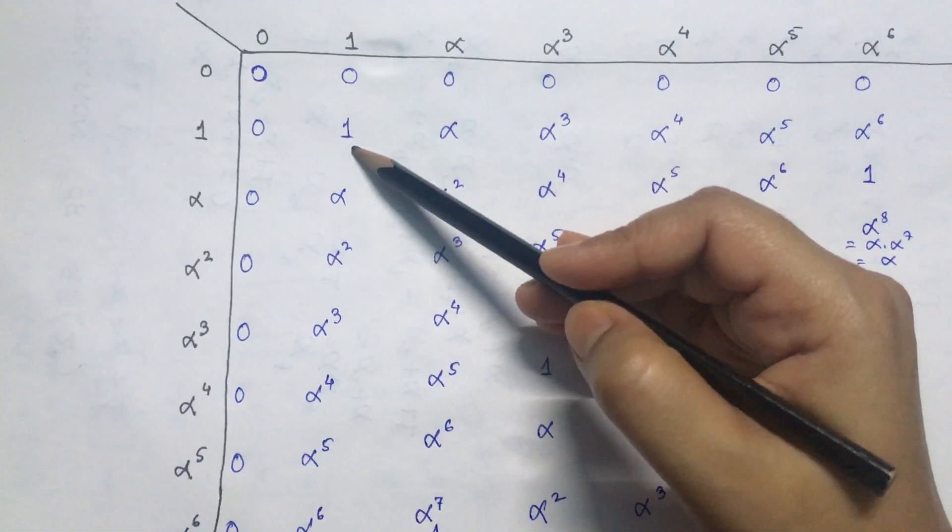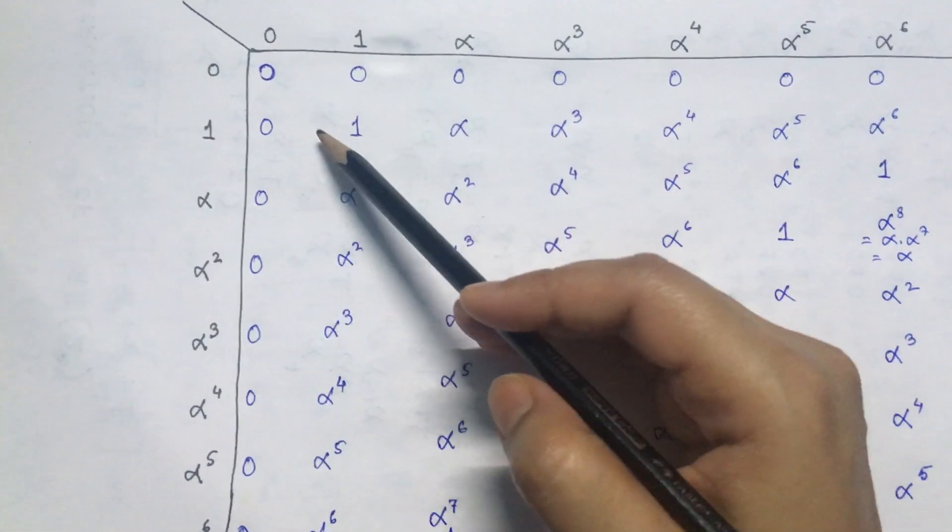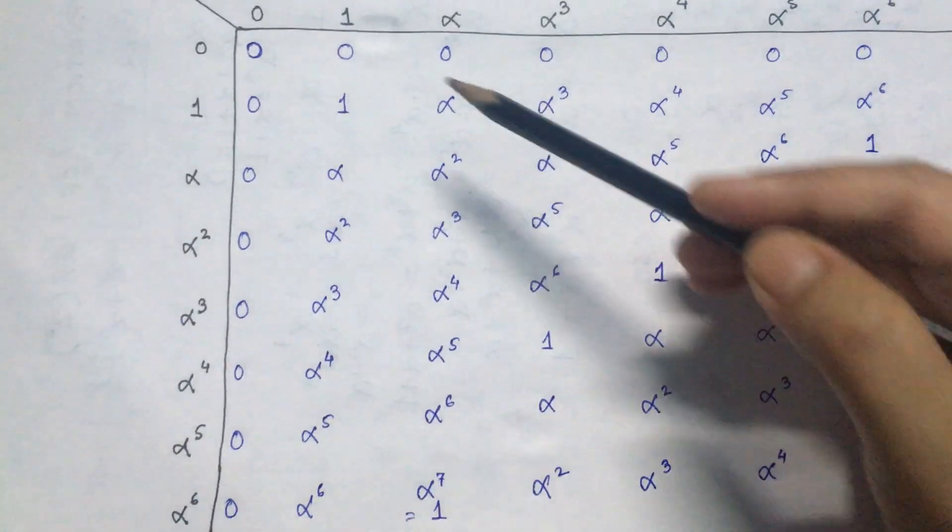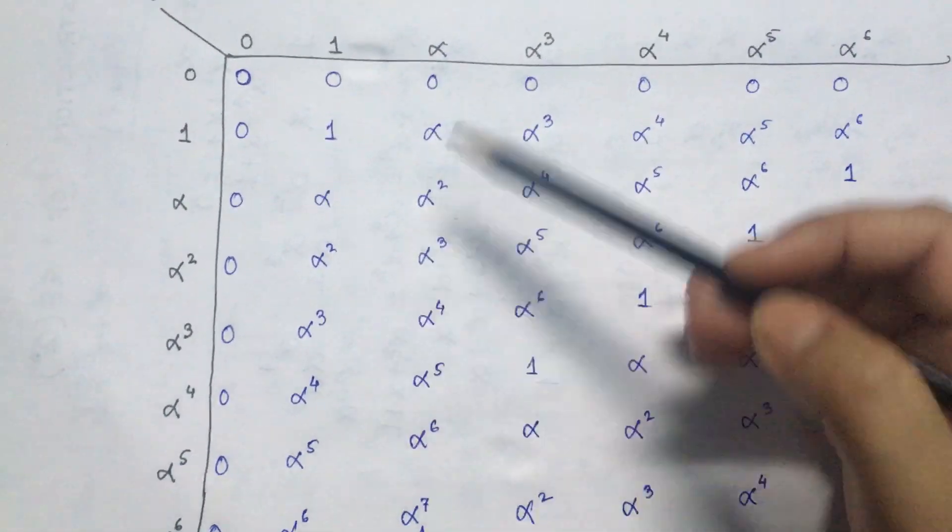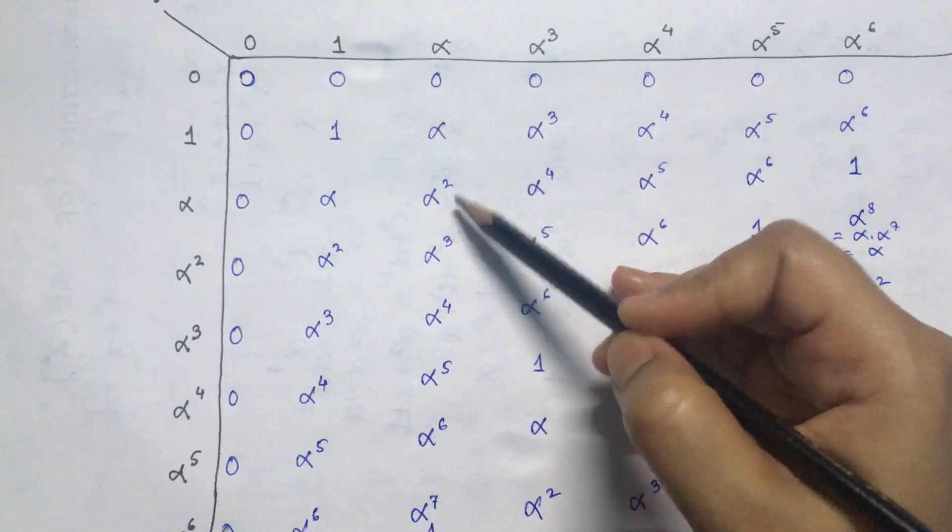If we multiply any element by 1, we get back the element itself. So that is how we get the second row and the second column. Now, the third row.